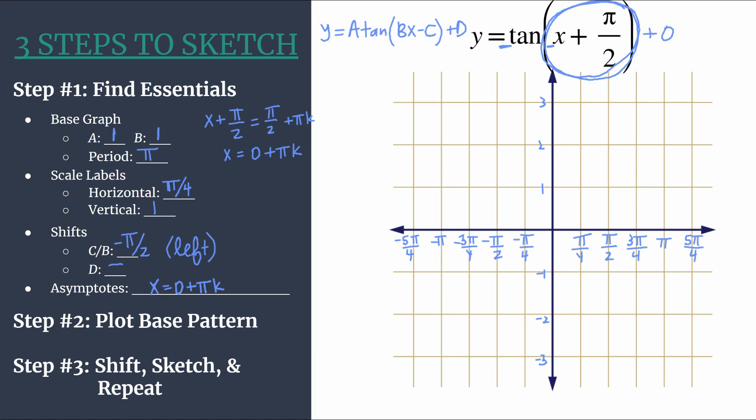So this equation for asymptotes will generate any of the asymptotes for your graph. Simply substitute in values for K that are integers. So you can let K be zero. We should have an asymptote at x equals zero. If K is one, substitute that in and you can see you'd have zero plus pi. So there should be another asymptote at pi. If you let K be negative one, you should see there should be one at negative pi. And so this equation will get you all of your asymptotes for this equation, even though there are infinitely many. It's a really efficient way to represent them.